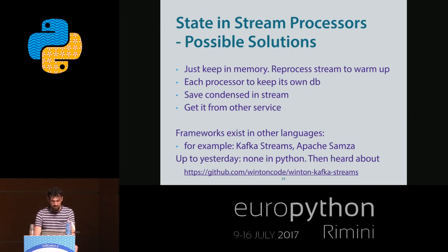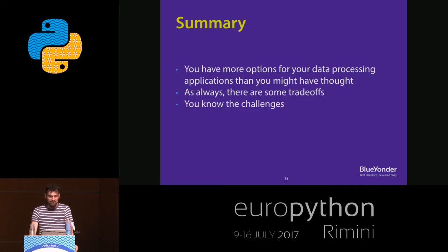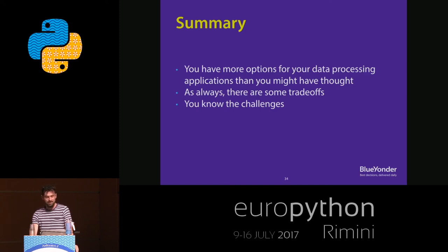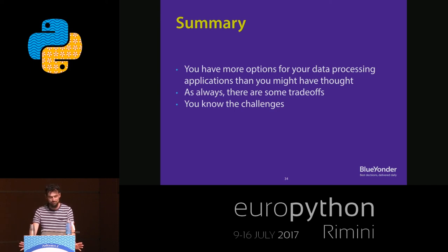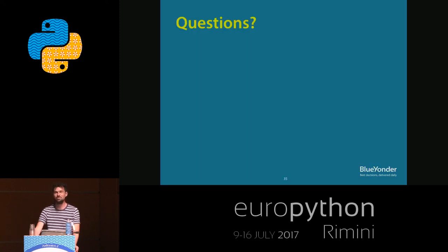You can see the GitHub link: Winton code, Winton Kafka Streams. To summarize: you have more options for your data processing application than you might have thought, but you also know the trade-offs. I want to encourage you to broaden your thinking about your application - there are more things you could use, and you need to check whether you can live with the trade-offs. You know the challenges, you know some possible solutions. Now go build some great applications!